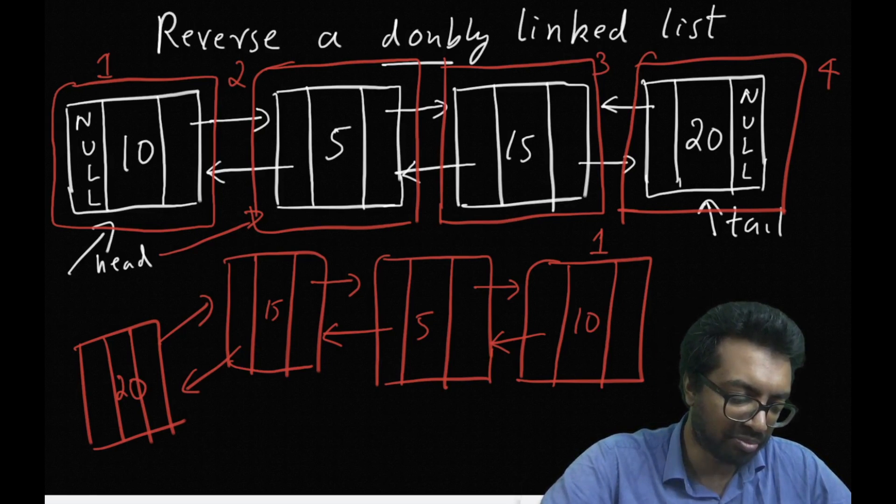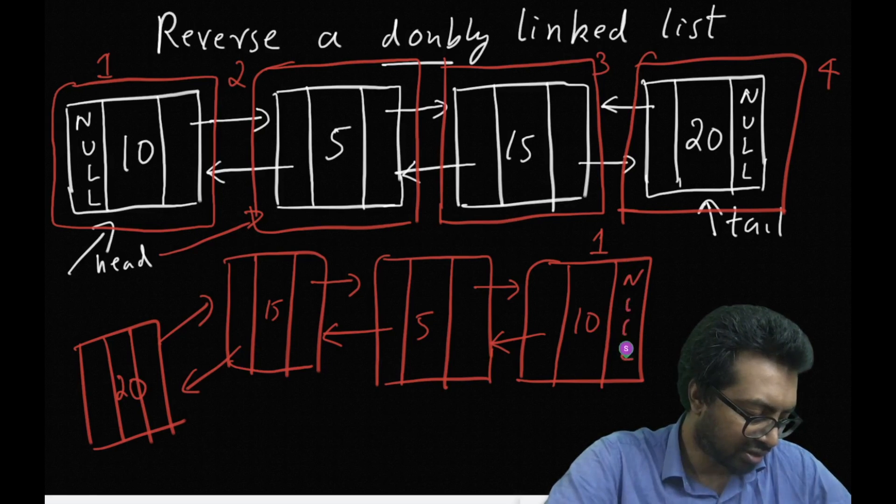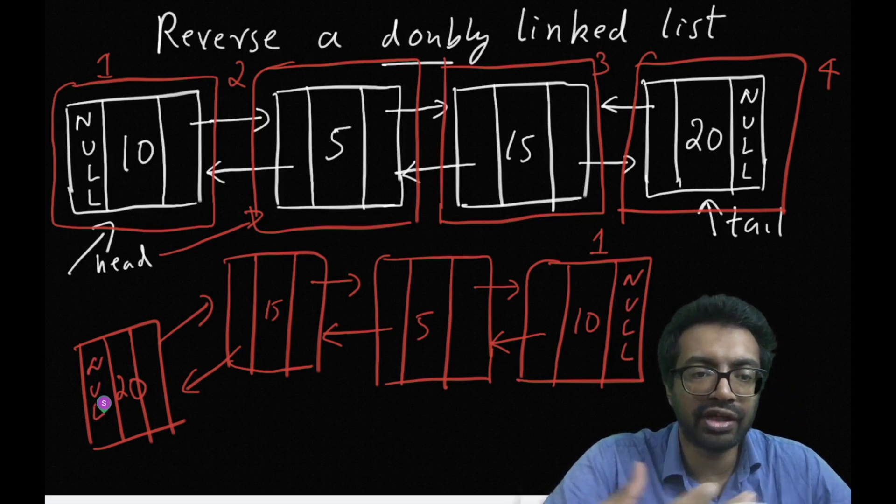So obviously we have to fill up the null pointers. That would have been filled up automatically when we add a node to the front.